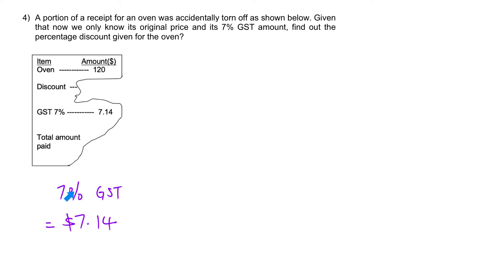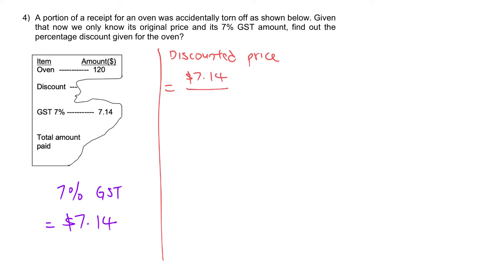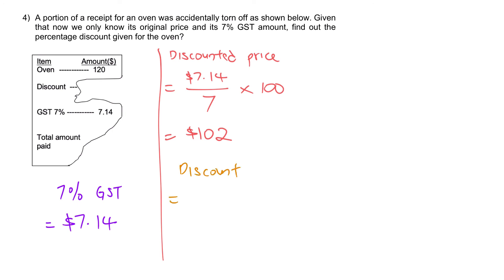If we work backwards to figure out the 100%, that would be the discounted price. We take $7.14 and divide by 7 to find the 1%, then multiply by 100. That gives us $102, which is the discounted price. If you calculate 7% of $102, you get $7.14, which is the GST. Hence, from $120, after the discount you only need to pay $102. So the discount would be $120 minus $102, giving a discount of $18.